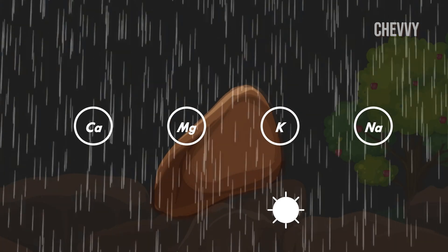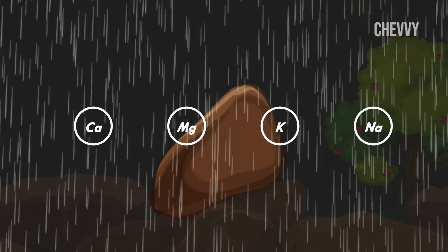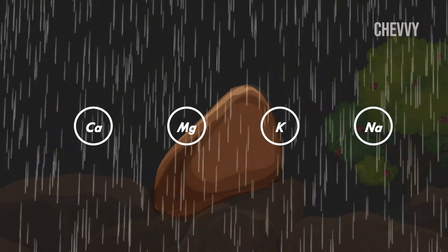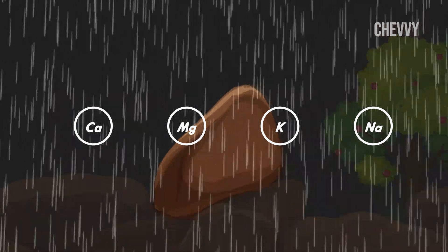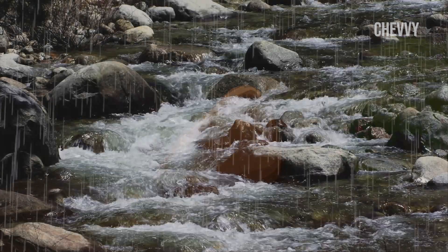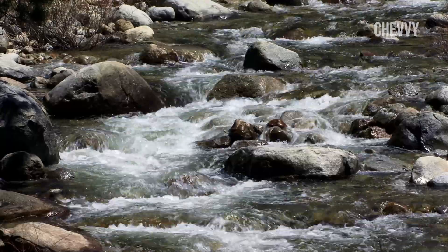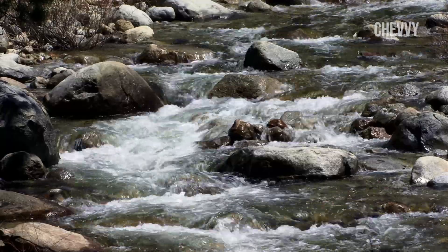By releasing calcium, magnesium, potassium, or sodium ions, this chemical weathering process modifies the chemical makeup of rocks. These ions are transported from the rocks to the ocean through rivers.